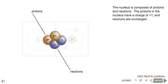The nucleus is composed of protons and neutrons. The protons in the nucleus have a charge of positive 1, while neutrons are uncharged.